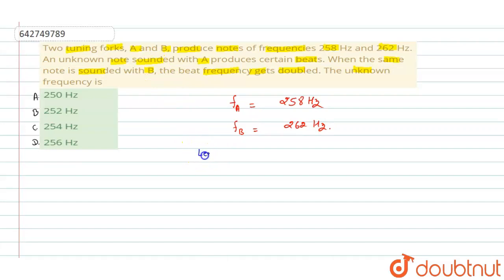Now we know that beat for the unknown frequency - suppose let unknown frequency is equal to, let unknown frequency is f - is equal to f. So we can write here that f_A minus f, or this may be f minus f_A, because beat is always equal to difference between both the frequency they are sounding at the same time.